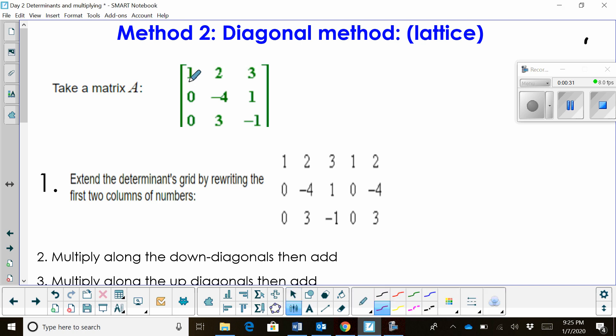So notice we've got 1, 2, 3, and then 0, negative 4, 1. We're taking these two columns and rewriting them here, and the second one we rewrote here. So we're just extending our matrix to add two more columns.